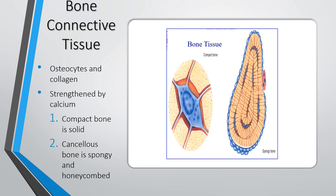Bone is also a connective tissue, made up of osteocytes — the bone cells — along with collagen, strengthened by calcium. We have two types: compact bone, which is the solid shaft of the bone, and cancellous bone, which is spongy and honeycombed with holes, giving it a lot of tensile strength.